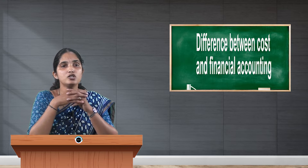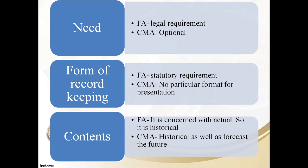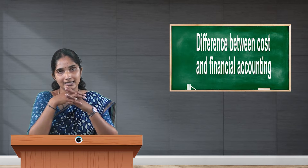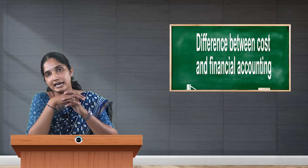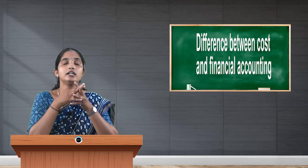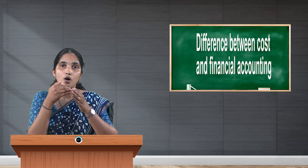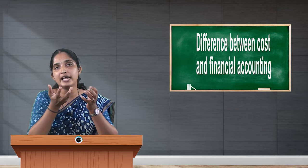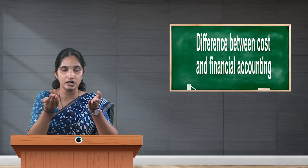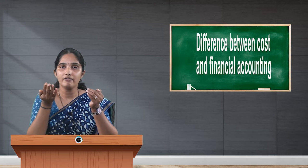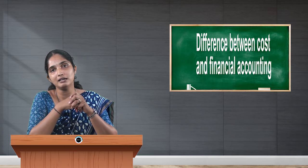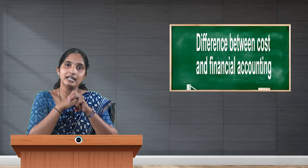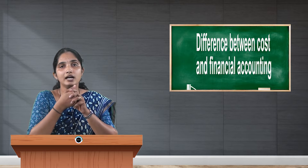Whereas cost and management accounting prepares information that is historical as well as forecasting future information. In cost and management accounting, we prepare tenders and quotations, and while doing so, the accountant must have knowledge about the future — how costs may change — taking estimation of the future into consideration. So financial accounting records historical information, whereas cost and management accounting records historical as well as forecasts future events.